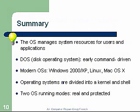The OS manages system resources for users and applications. DOS — disk operating system — is an early command-driven type of operating system, and it's still very useful. I use it daily to help maintain my Windows operating systems. Modern OSes include Windows 2000/XP, Linux, and the Mac OS. Operating systems are divided into the kernel and the shell. The shell is where the user interfaces with the keyboard and the computer. The kernel is what manages the hardware. The OS has two running modes: real mode and protected mode. Real mode directly accesses the hardware. Protected mode was created by Microsoft to prevent two applications from accessing hardware directly, which would cause conflicts and blue screens.